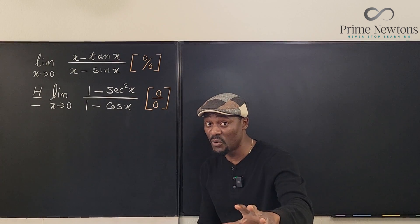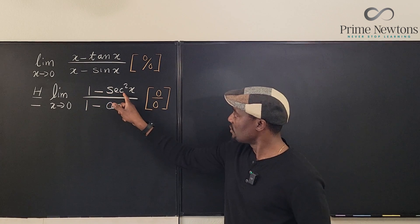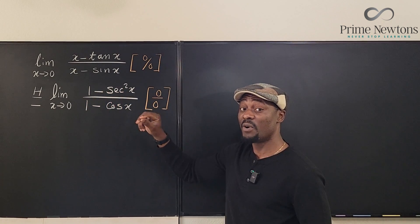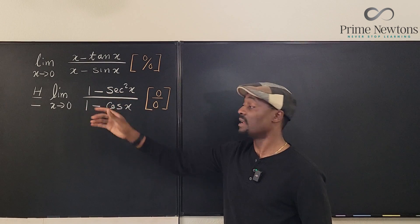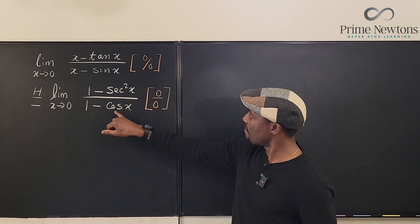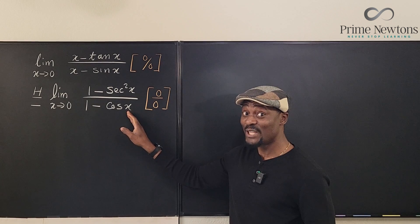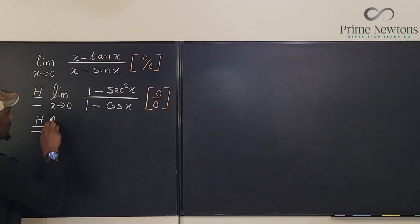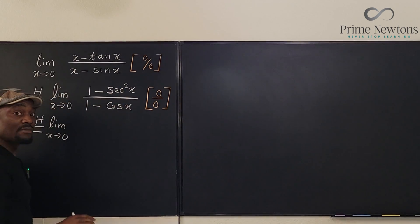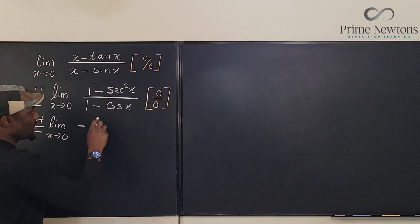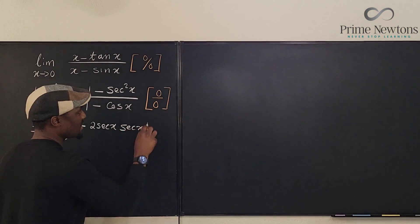The next question is: should you use L'Hôpital's rule again? If you apply it one more time, you're going to get zero in the numerator, but you also have to take the derivative of sec²(x), which involves the chain rule. Let me show you why you shouldn't. The derivative of 1 is zero; the derivative of sec²(x) by the chain rule gives negative 2·sec(x) multiplied by the derivative of sec(x), which is sec(x)·tan(x).